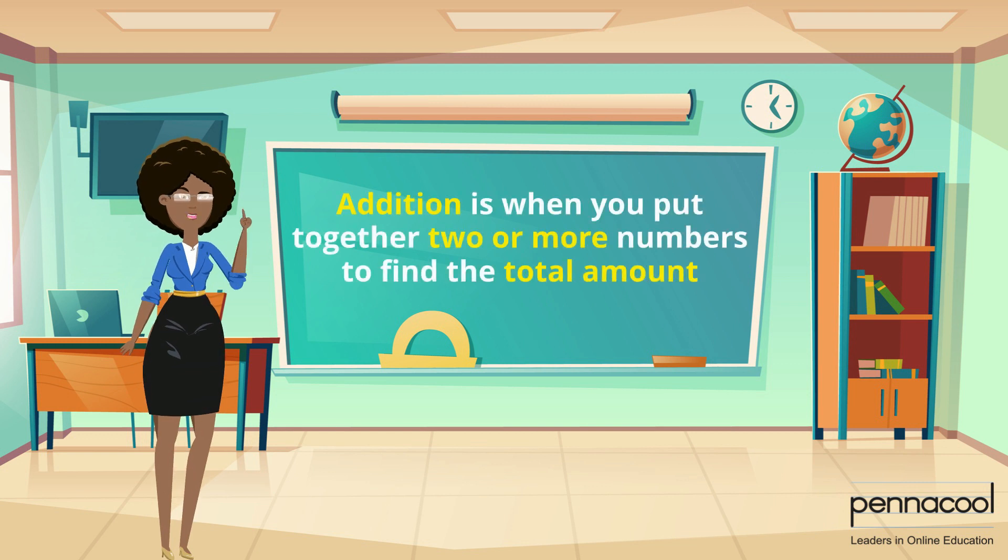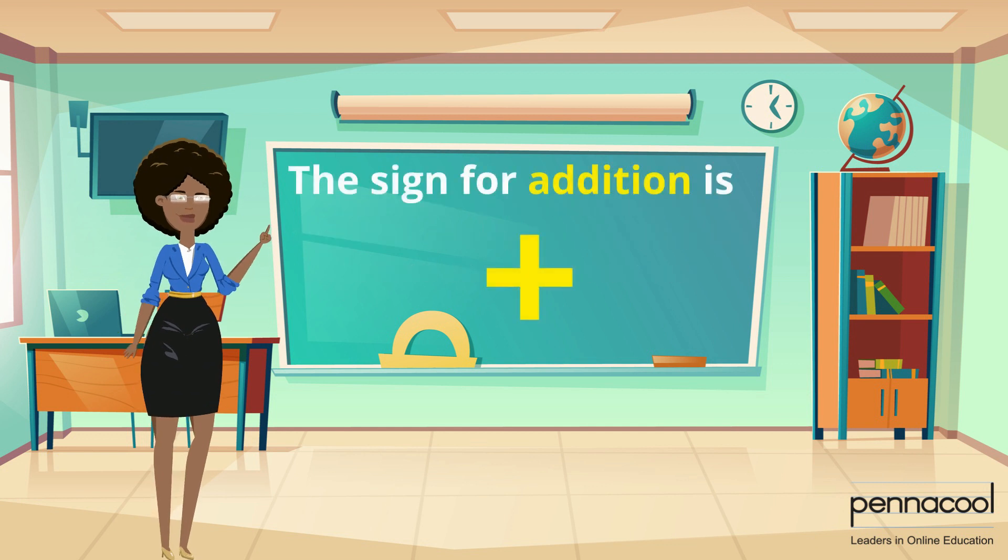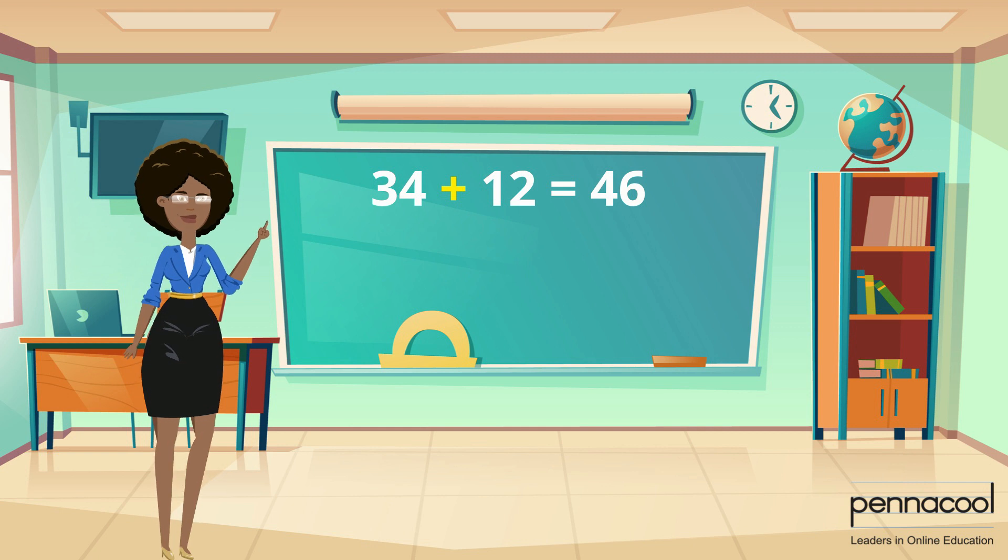Addition is when you put together two or more numbers to find the total amount. This is the sign for addition and it's also called the plus sign. 34 plus 12 is equal to 46.